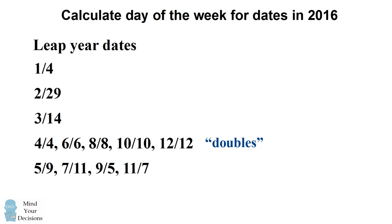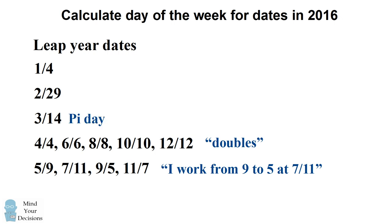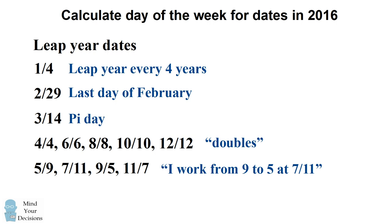For the last line of dates, you can think about the phrase: I work from 9 to 5 at 7-11. This will give you the dates 9-5, 7-11, and you can swap the numbers to get 5-9 and 11-7. The date in March, I think about as Pi Day, because the constant Pi is approximately 3.14. 2-29 is the last day of February, and you can think about 1-4 because a leap year happens every 4 years.